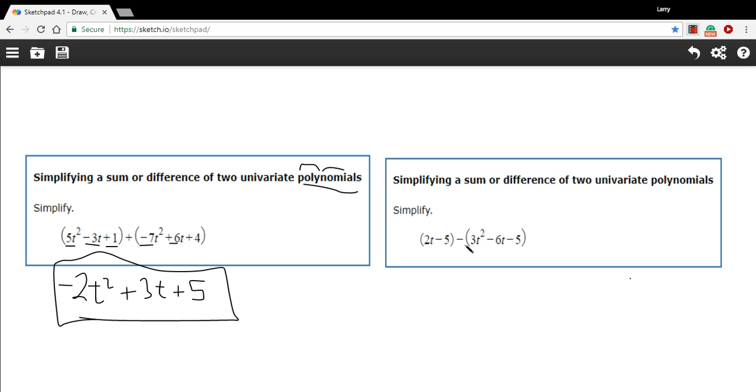It can get a little trickier with the subtraction. So here we have 2t minus 5 minus this whole quantity. If you can keep it straight in your mind that you're subtracting each of these terms, that'll work. Or you could simply distribute the negative sign and add them.